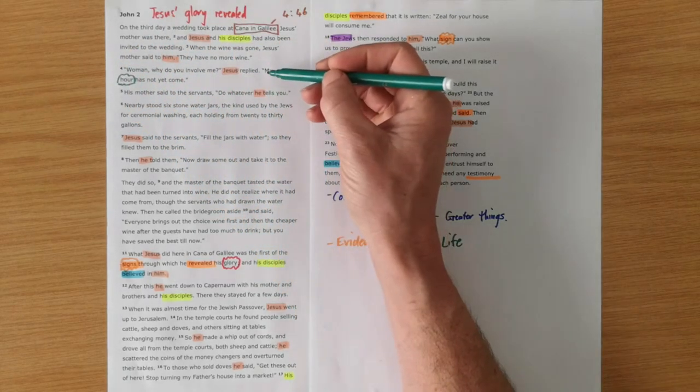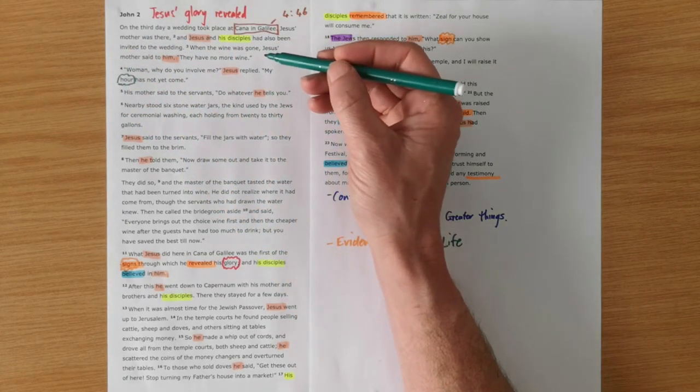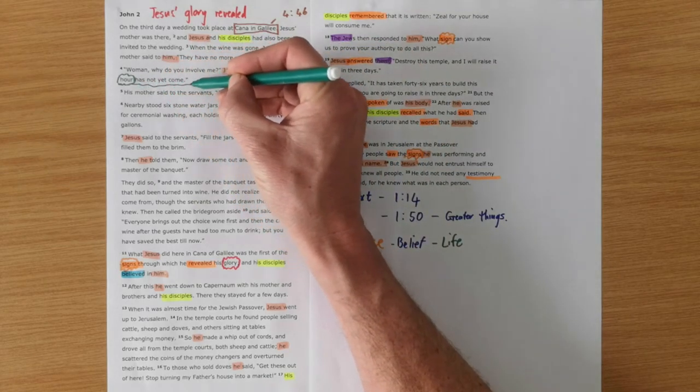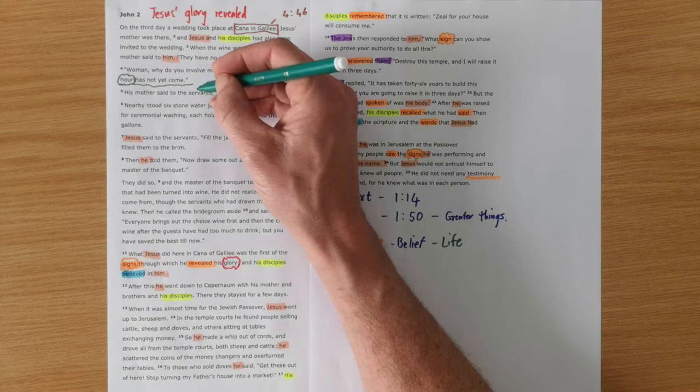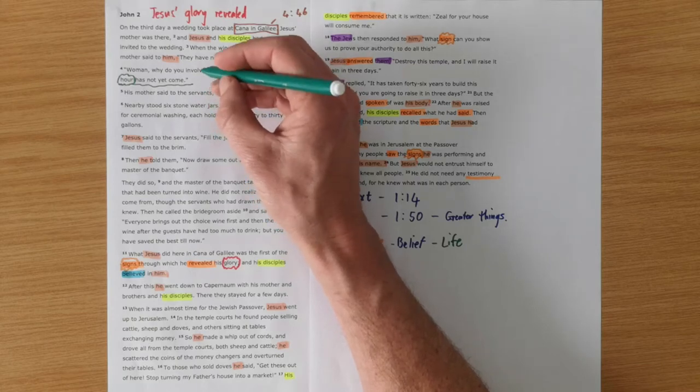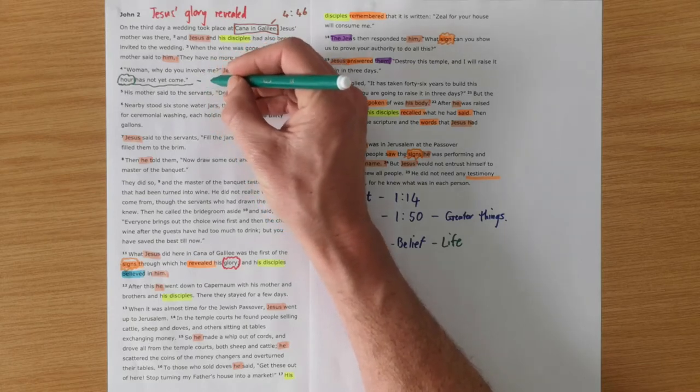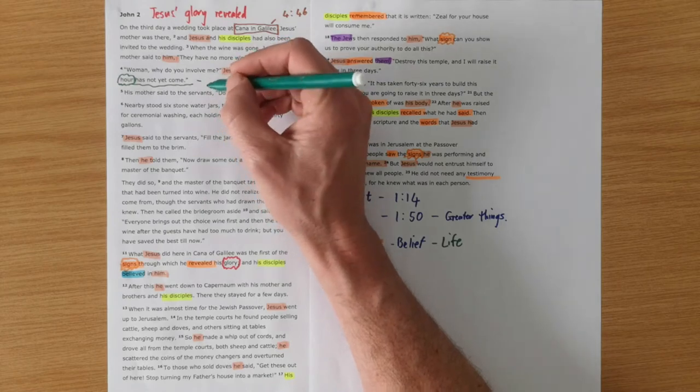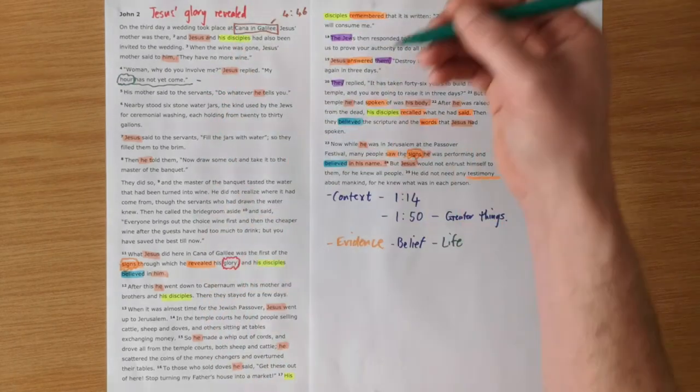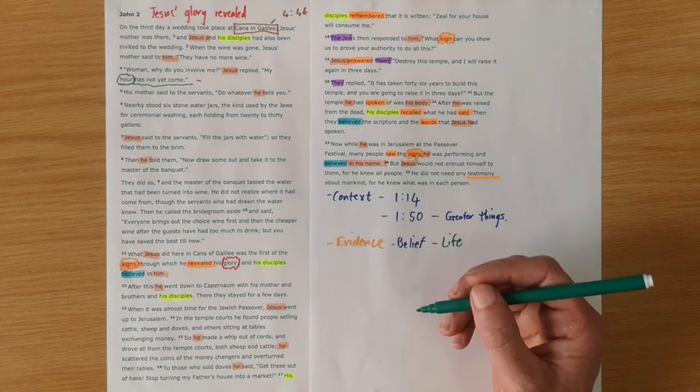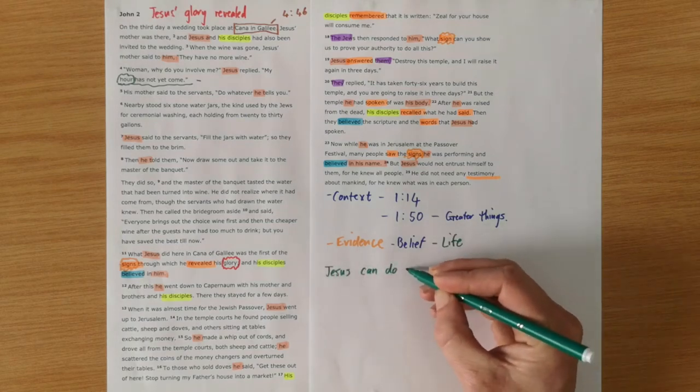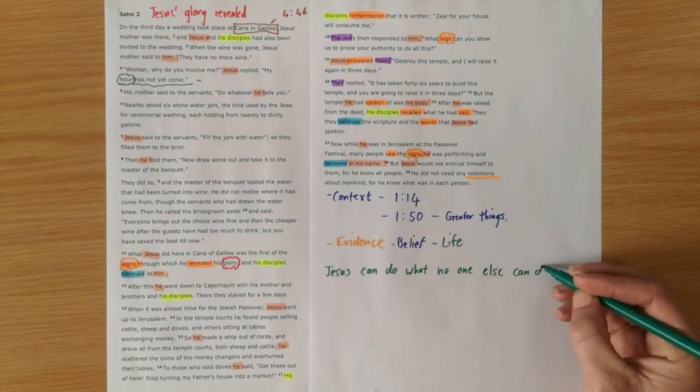Just another important theme to look out for in John's Gospel is the idea of the hour. And here, Jesus says to His mother, when she asks Him to help, that His hour has not yet come. The hour in John is referring to the hour of His death, the greatest sign by which He reveals His glory, and shows that He can do what no one else can do. And that's what we see in this section. He can do what no one else can do.